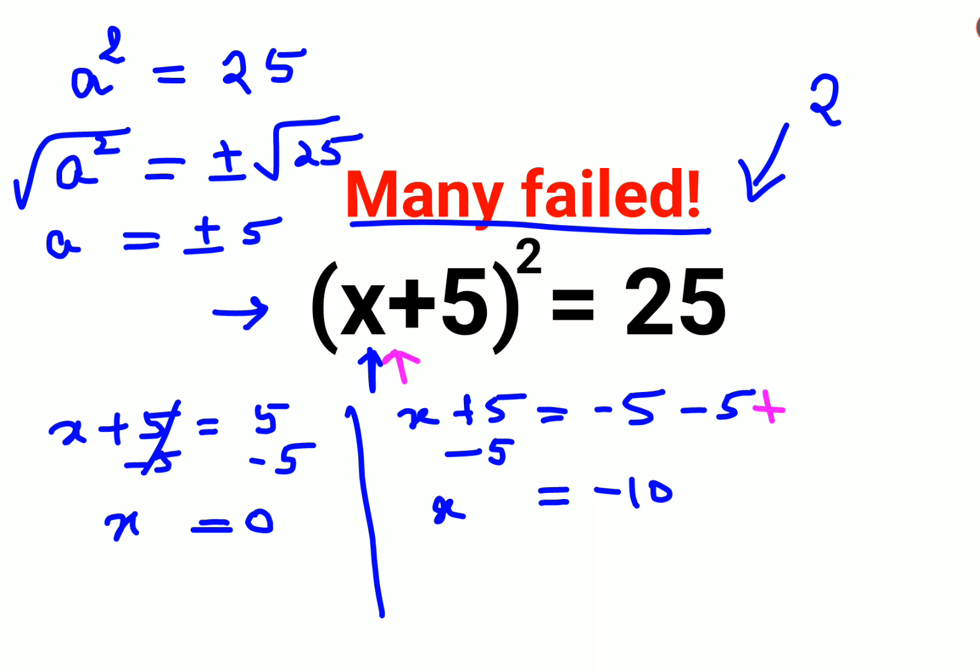Let's verify. We'll take x equals 0. So 0 plus 5, the whole squared, gets you 5 squared, which is 25.